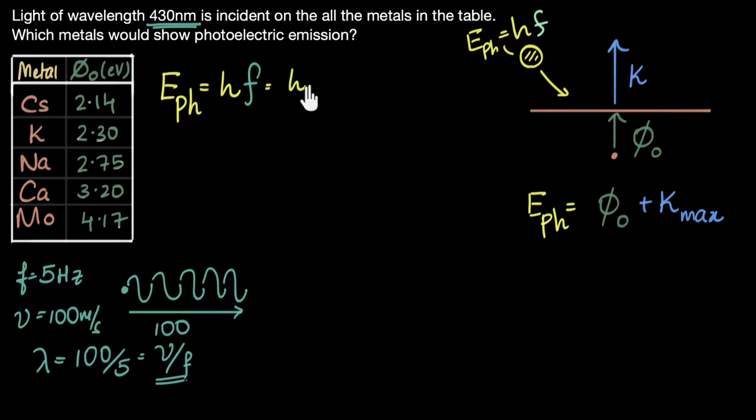So this will be H times, frequency would be the velocity, velocity of light, and we know velocity of light, that's c. So velocity of light is c divided by the wavelength. The value of h, we know that. It's 6.63 times 10 to the power minus 34. Velocity of light is three times 10 power eight. Wavelength is given, so we can substitute.